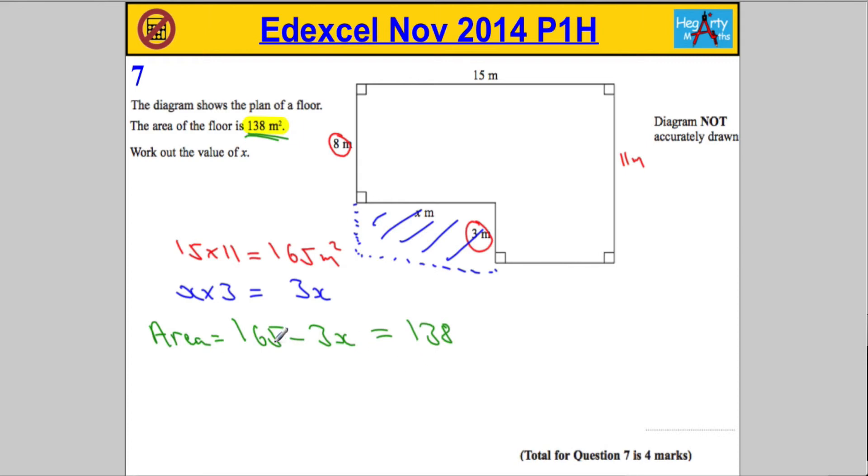So now what I'm going to do is I'm going to solve this equation. First and foremost, I'm going to subtract 165 from both sides. And doing so, let's see, from 140 to 165 would be 25, so it must be 27. But remember, this is bigger than this, so it's equal to negative 27.